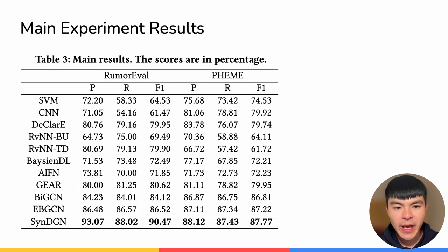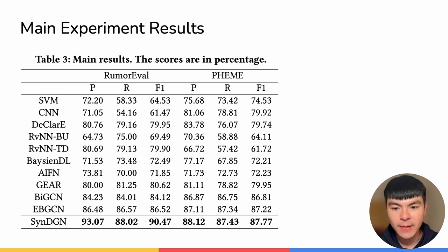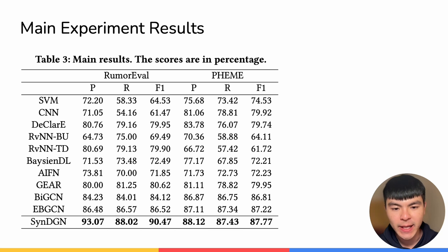As for the experiment results, we first show that SynthDGN outperforms conventional methods like SVM or CNN. We also show that SynthDGN outperforms deep learning-based or graph neural network-based baselines, which is much more challenging, like BiGCN and EBGCN. We can see in the last row that SynthDGN consistently outperforms all previous baselines.